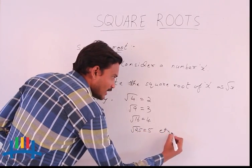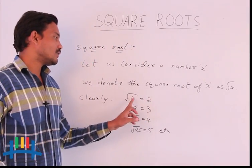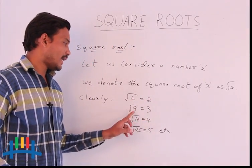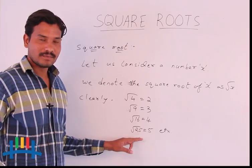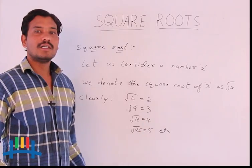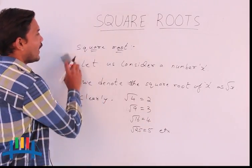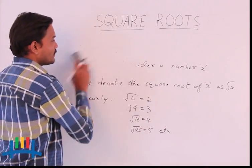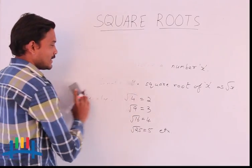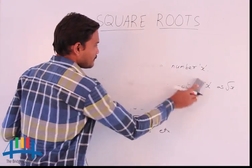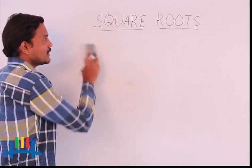These are the square roots of the numbers 4, 9, 16 and 25. Now we will discuss bigger numbers and how to find the square root. We have two methods to find the square roots of bigger numbers.